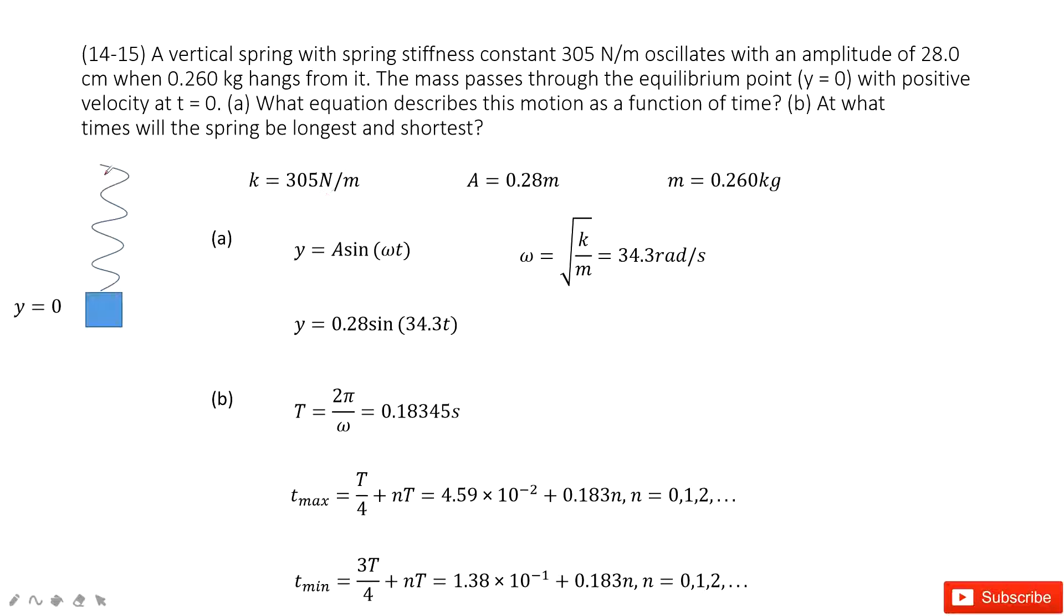In this one, we have a vertical spring. The constant is given, amplitude is given, mass of the object is given.